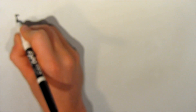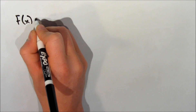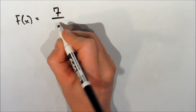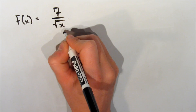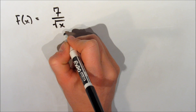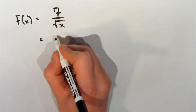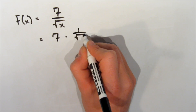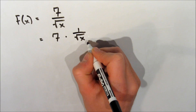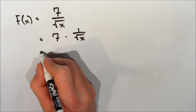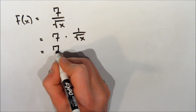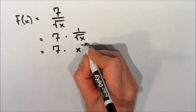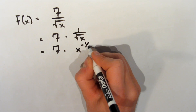Now let's do one final example. Our function this time is going to be 7 over the square root of x. We're going to break it up just like we did in the other questions and write the function as 7 times 1 over the square root of x. For this step, we're going to write the function as 7 multiplied by x to the exponent negative 1 half.